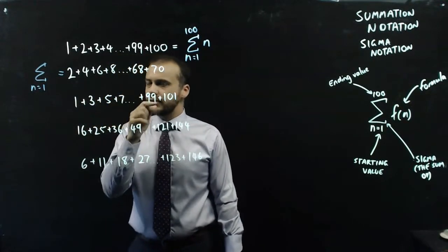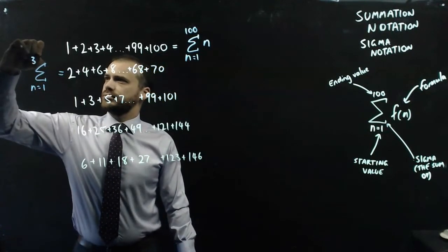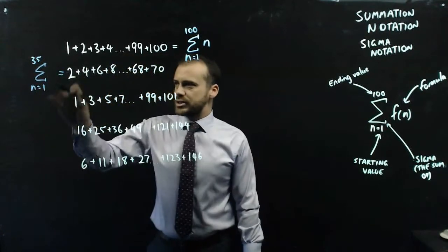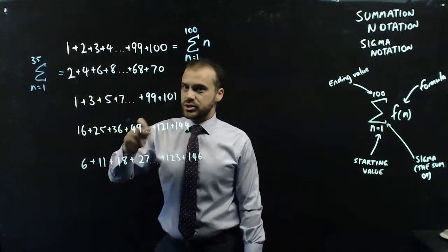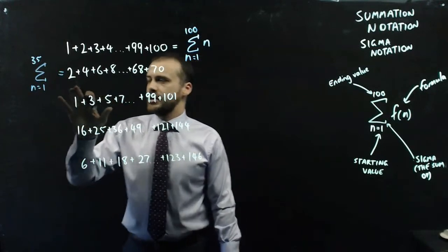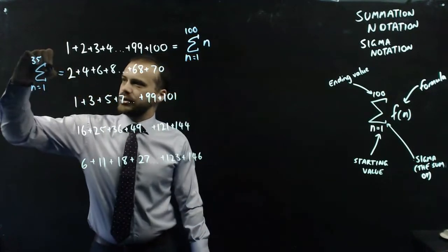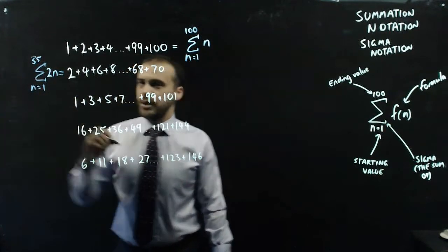Now, my ending value, 35. That's because I'm going to be putting all of the integers 1, 2, 3, 4, 5 into a formula where they spit out these numbers. And that formula is going to be 2n.